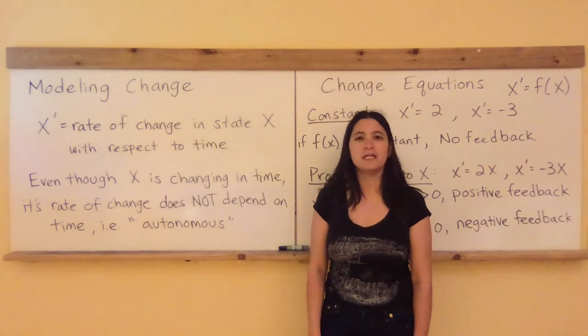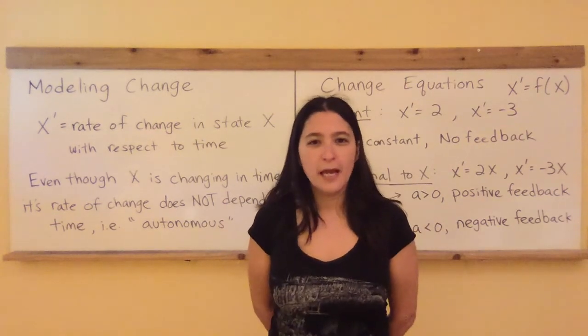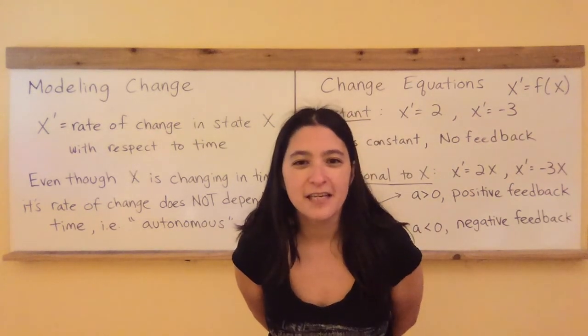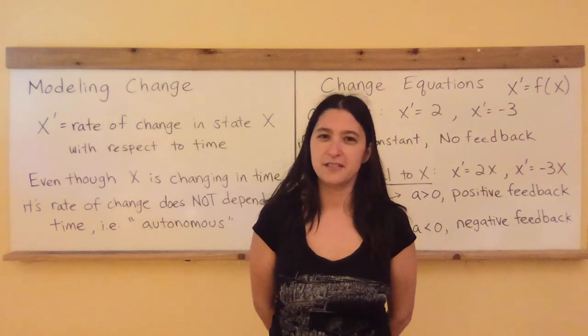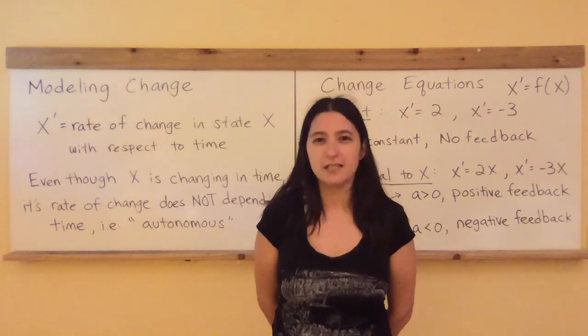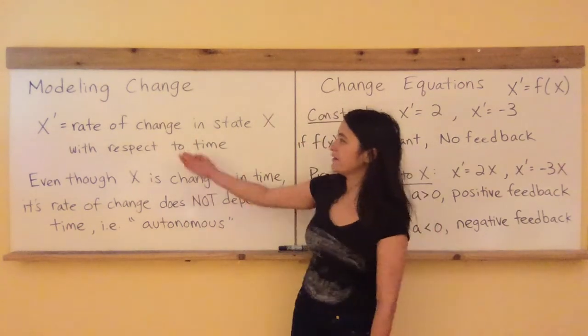This is known as autonomous equations. What does autonomous mean? The definition says having the freedom to govern itself or control its own affairs. That's exactly what these equations are doing. These equations are determining their own fate.